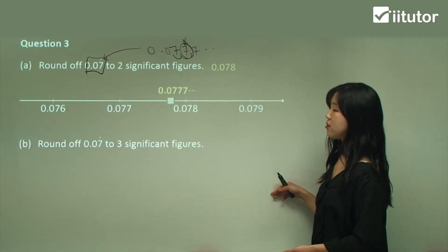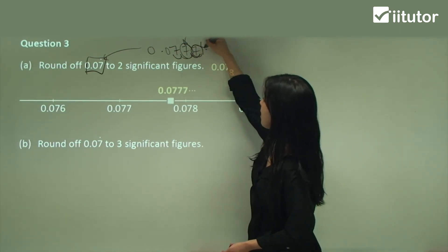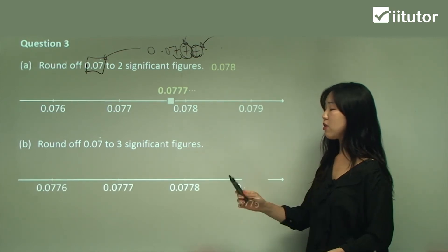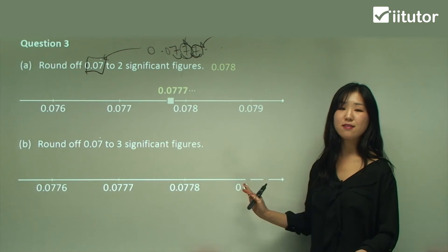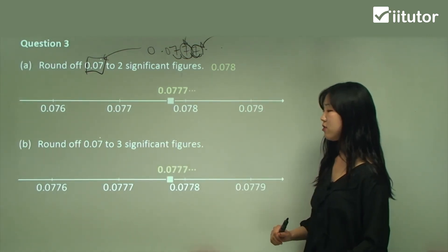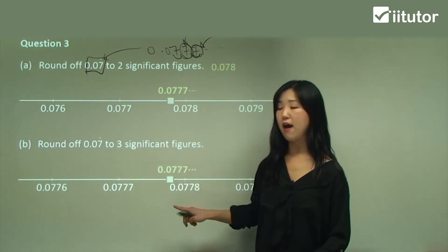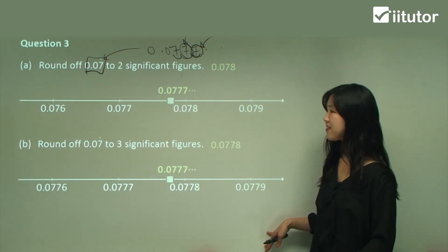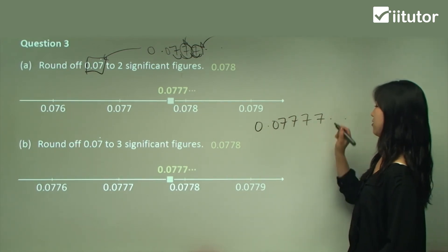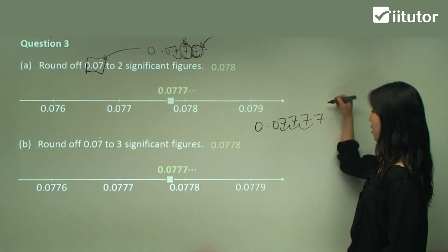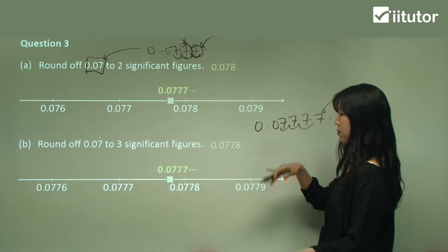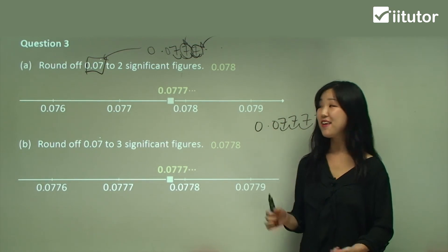Now round 0.0777... to three significant figures. We start from the first seven: one, two, three — so we need four decimal places. We go 0.0776, 0.0777, 0.0778, etc. 0.0777... is between these, and because the next digit seven is greater than five, it's closer to the right-hand side. So the answer is 0.0778. Without the number line: three significant figures starting from seven, one, two, three — the next number is greater than five, so we round up the last seven to eight, giving 0.0778.